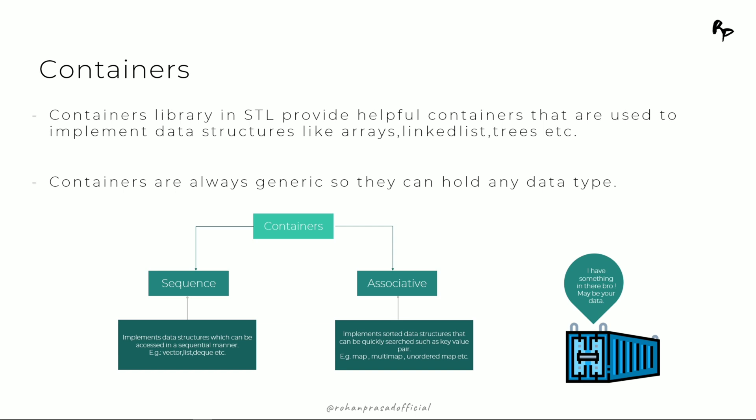Containers are always generic, so they can hold any kind of data type — be it integer, be it float, be it string, or any kind of data type. Containers can be broadly divided into two types, namely sequence and associative. In sequence, the data are stored in a sequential manner, whereas in associative, the data are stored in key-value pairs.